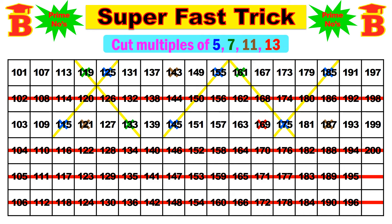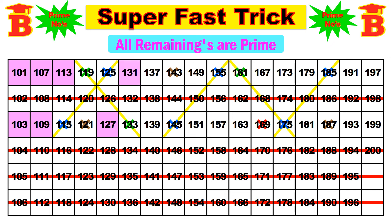All the remaining numbers are prime numbers. So the prime numbers from 101 to 200 are: 101, 103, 107, 109, 113, 127, 131, 137, 139, 149, 151, 157, 163, 167, 173, 179, 181, 191, 193, 197, and finally 199.